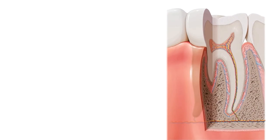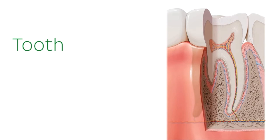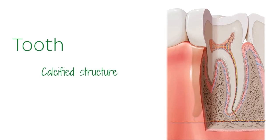So before we begin looking at the different types of teeth, let's just have a brief chat about the anatomy and the development of teeth. A tooth is a small calcified structure located within the jaw of human beings, and the main function of the tooth is to break down food into smaller pieces in a process called mastication.